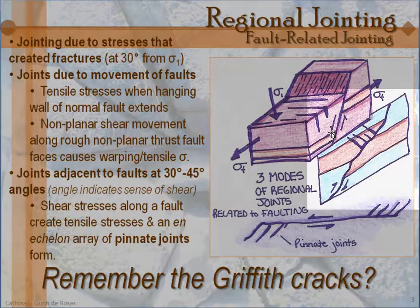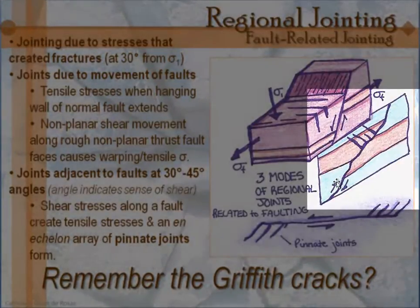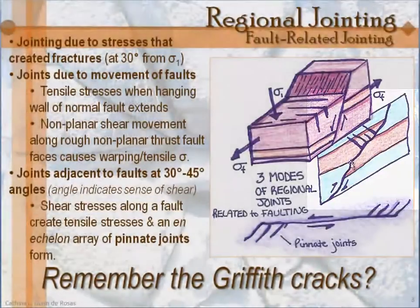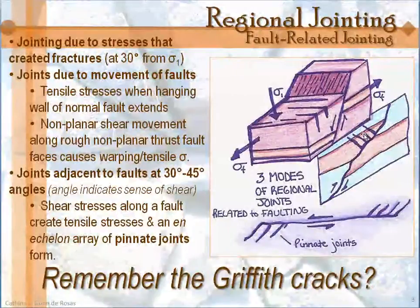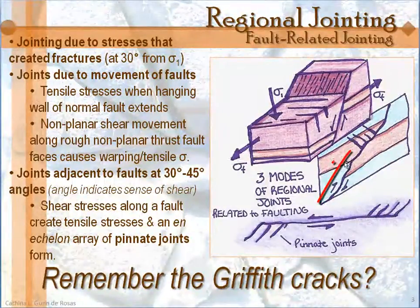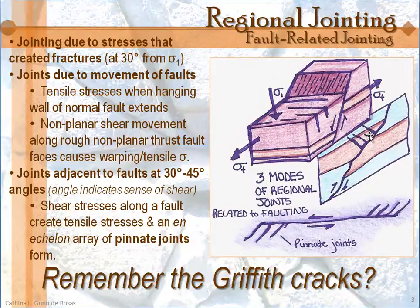You can also have joints that are due to the movement along faults — not due to the original stresses that caused the fault plane, but due to tensile stresses created when there's movement along a fault. From this thrust fault, the hanging wall has moved up relative to the footwall block. When the surface is rough and not totally planar, it causes frictional forces that cause warping. As it moves up, tensile stresses are created — along the lines of those extensional outer arc joints discussed in the last lesson.